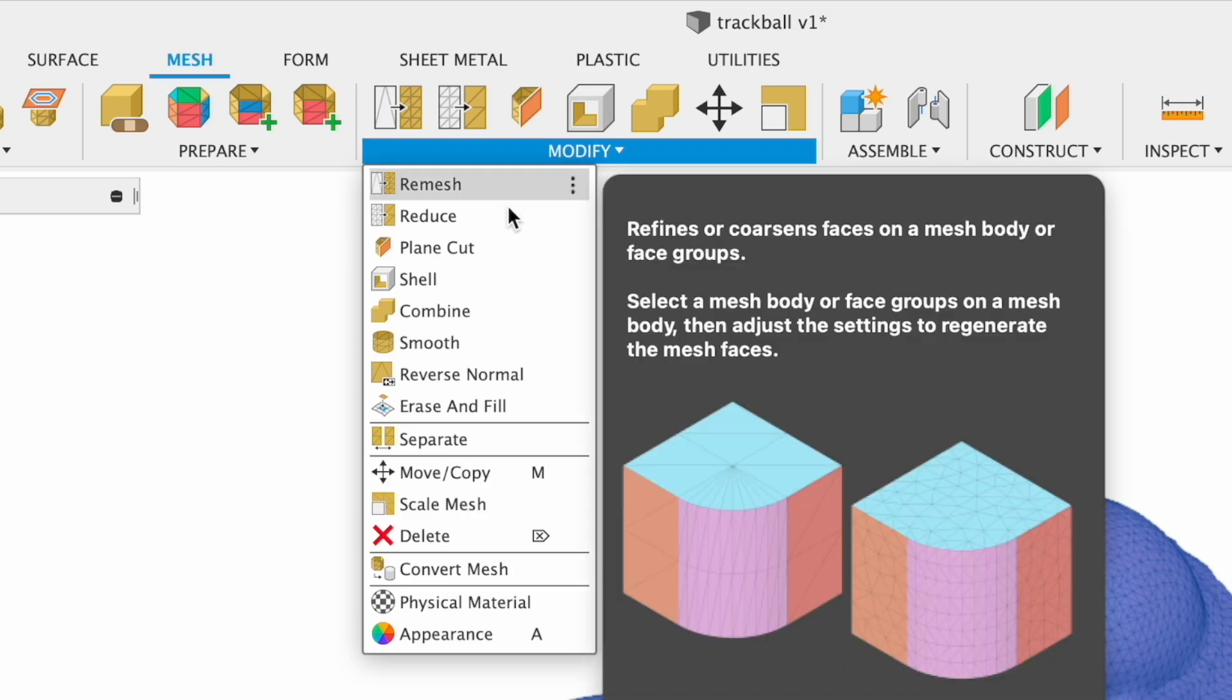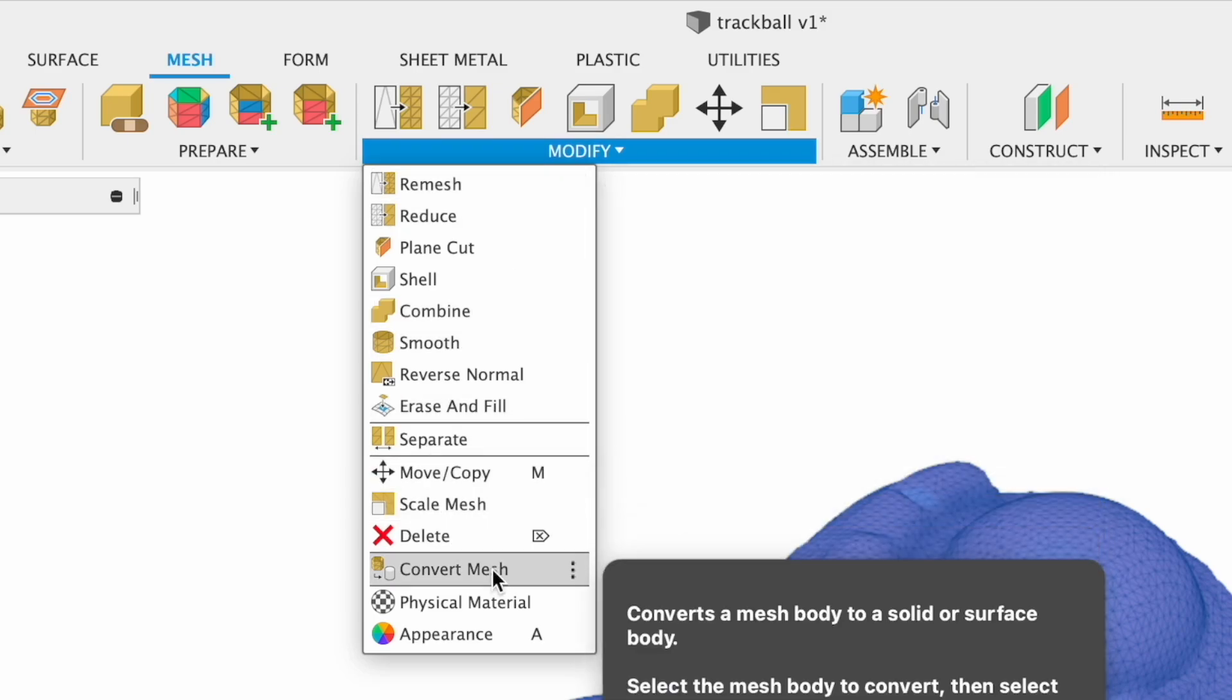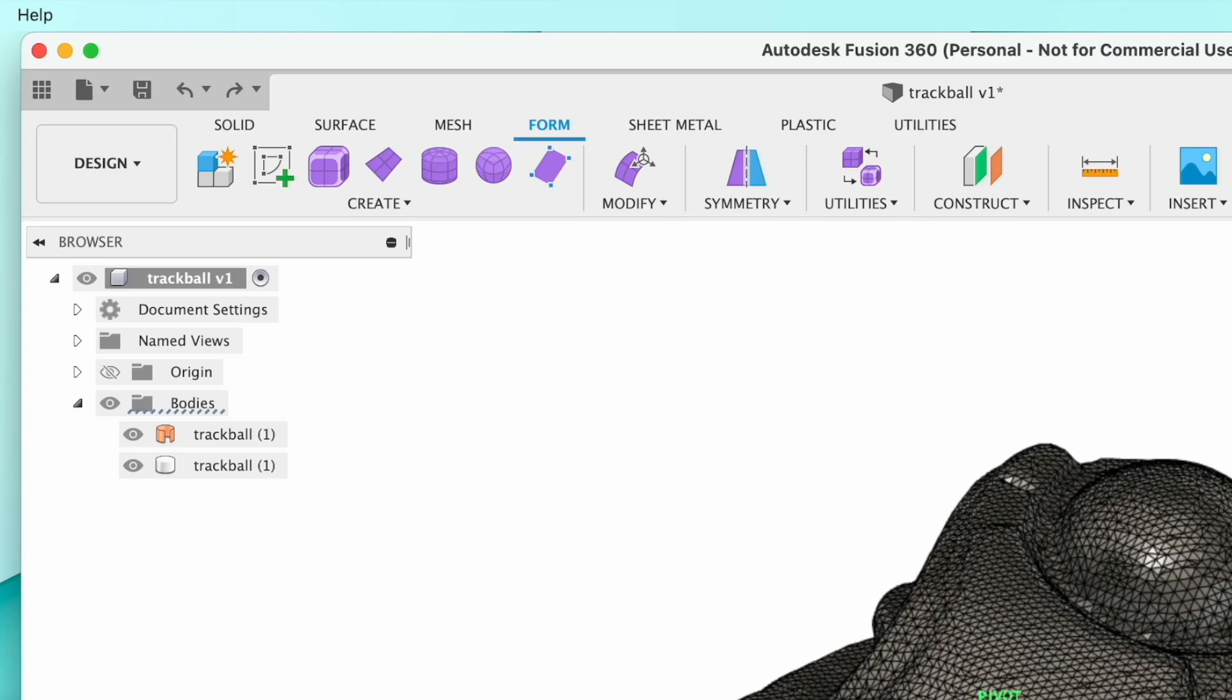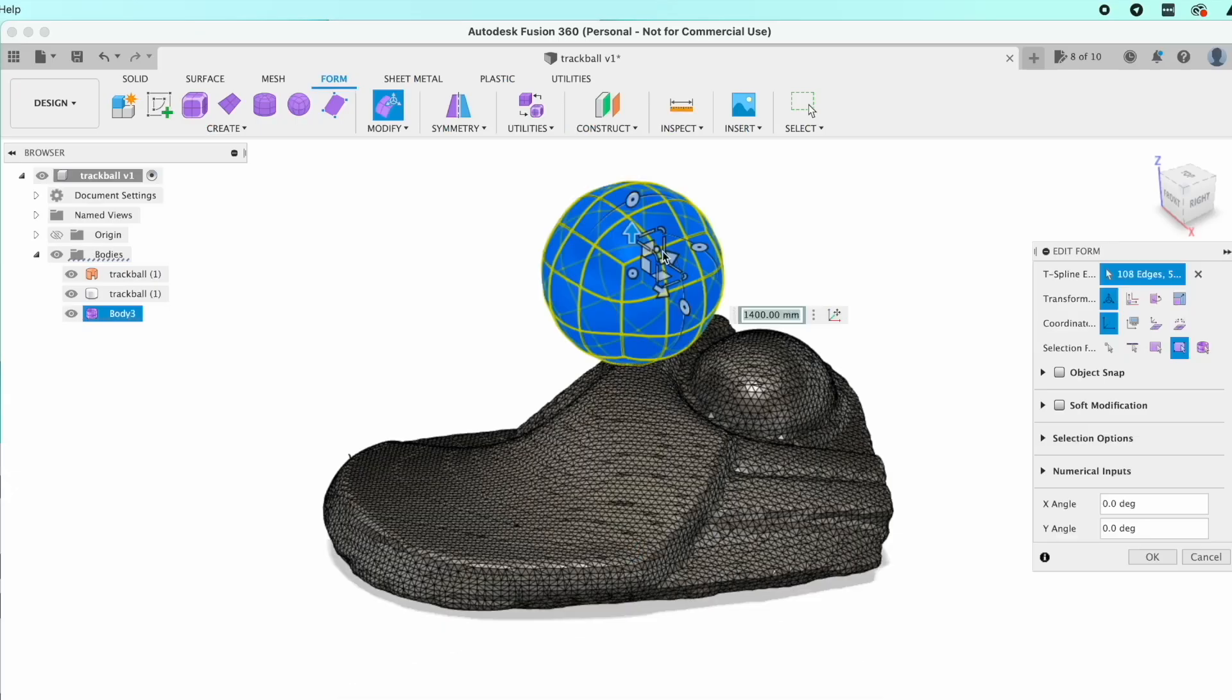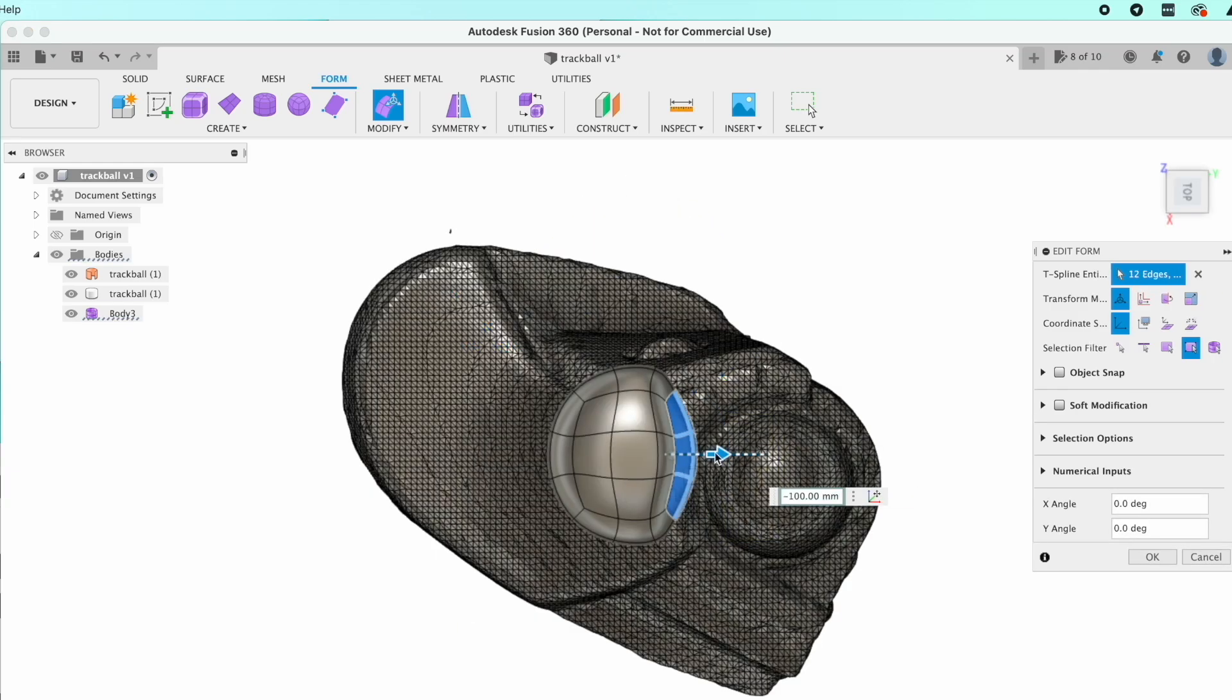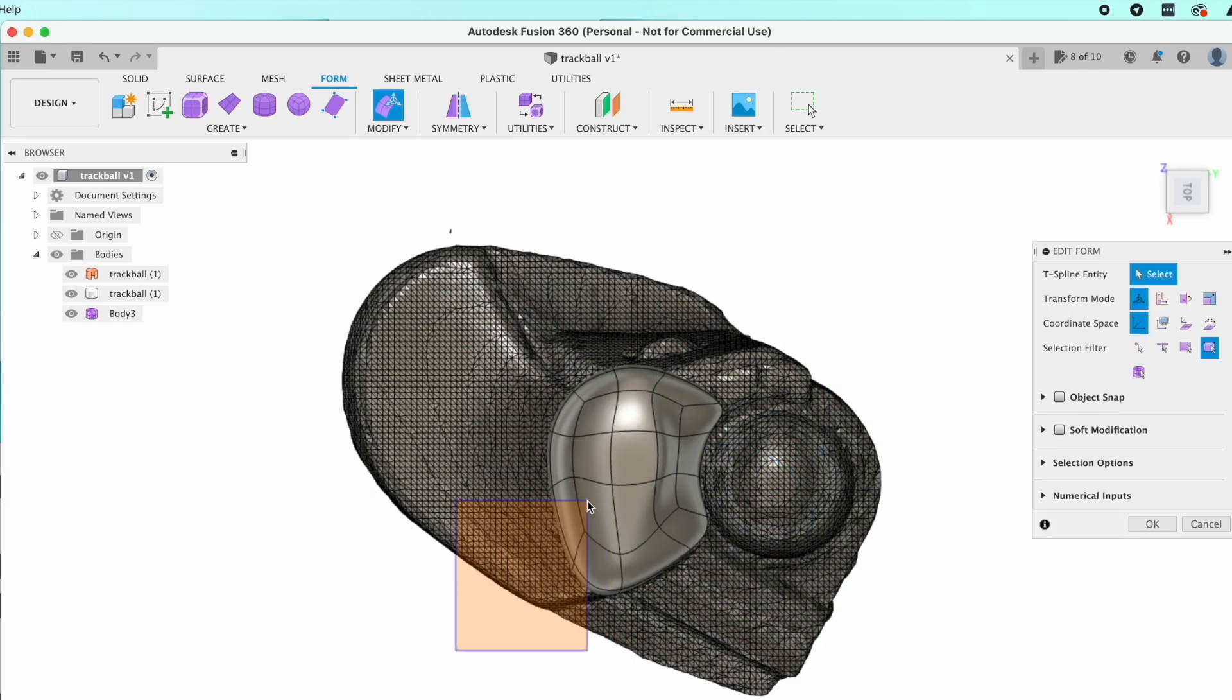Also because of the cleanup process done by Creality, I was pretty easily able to convert it into a solid body. I go to the form tab of Fusion 360, add a little sphere, and then use edit form to move that sphere into a rough palm rest shape.